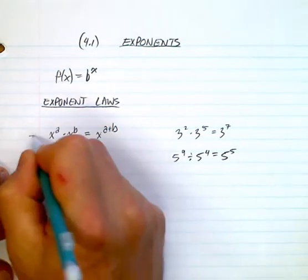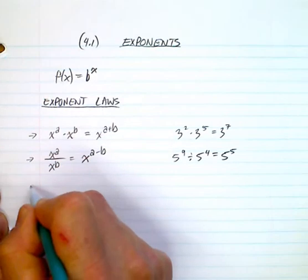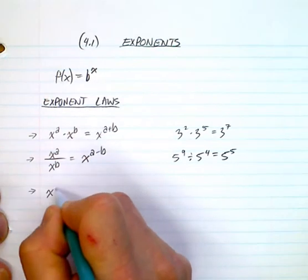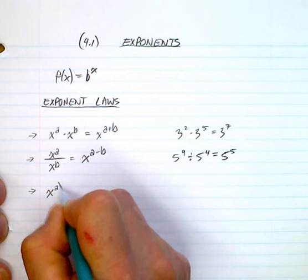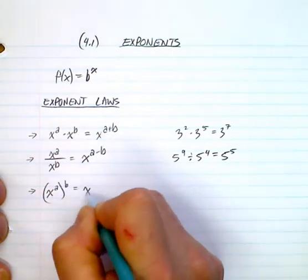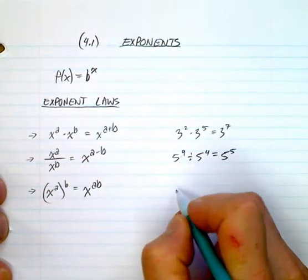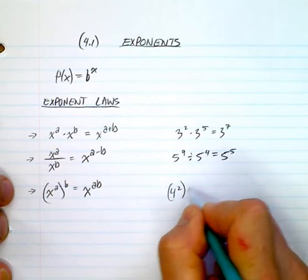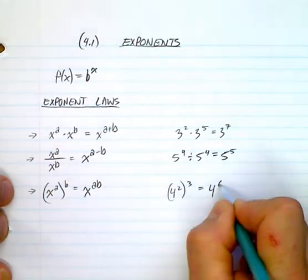And if we have a power to a power, so for example, x to the power of a all to the power of b, that would be x to the power of ab. An example would be, say, four squared all cubed would be four to the power of six.